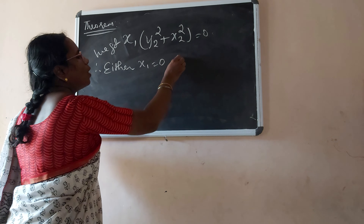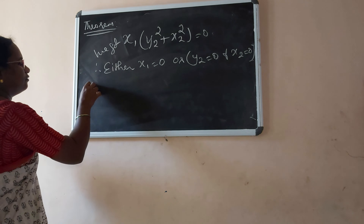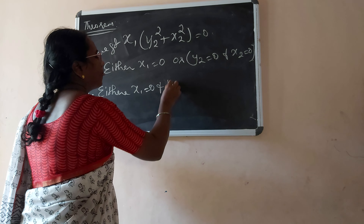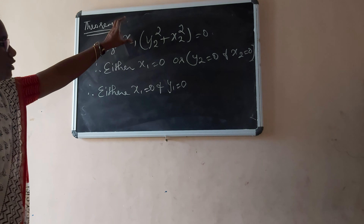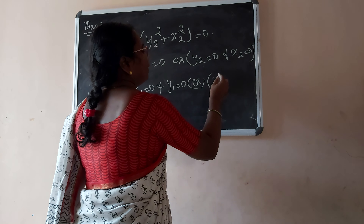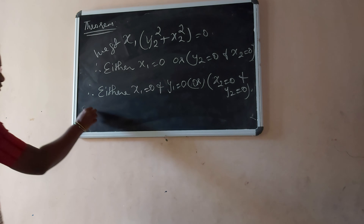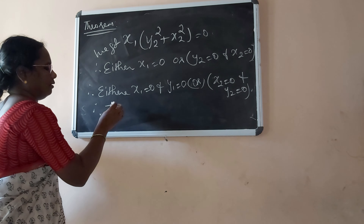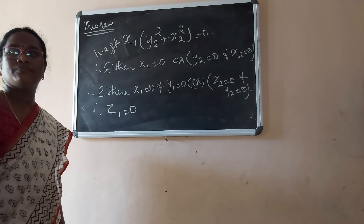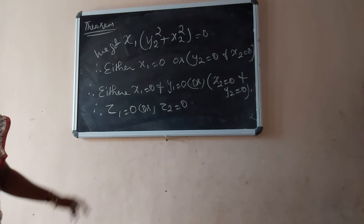Similarly, multiplying equation 1 by X2 and equation 2 by Y2, we get X1 into (Y2 squared plus X2 squared) is equal to 0. Therefore, either X1 is equal to 0, or Y2 is equal to 0 and X2 is equal to 0.